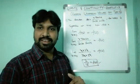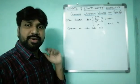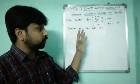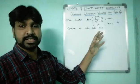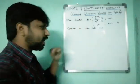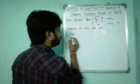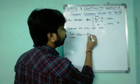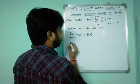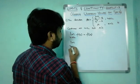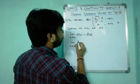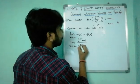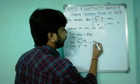Coming to the second question: the function f(x) is given and is continuous at x = 2. Then a equals what? This is type 2, so directly apply: limit x→2 of f(x) equals f(2). f(2) is capital A, and f(x) equals (2^(x+2) − 16) / (4^x − 16). So A equals that limit.